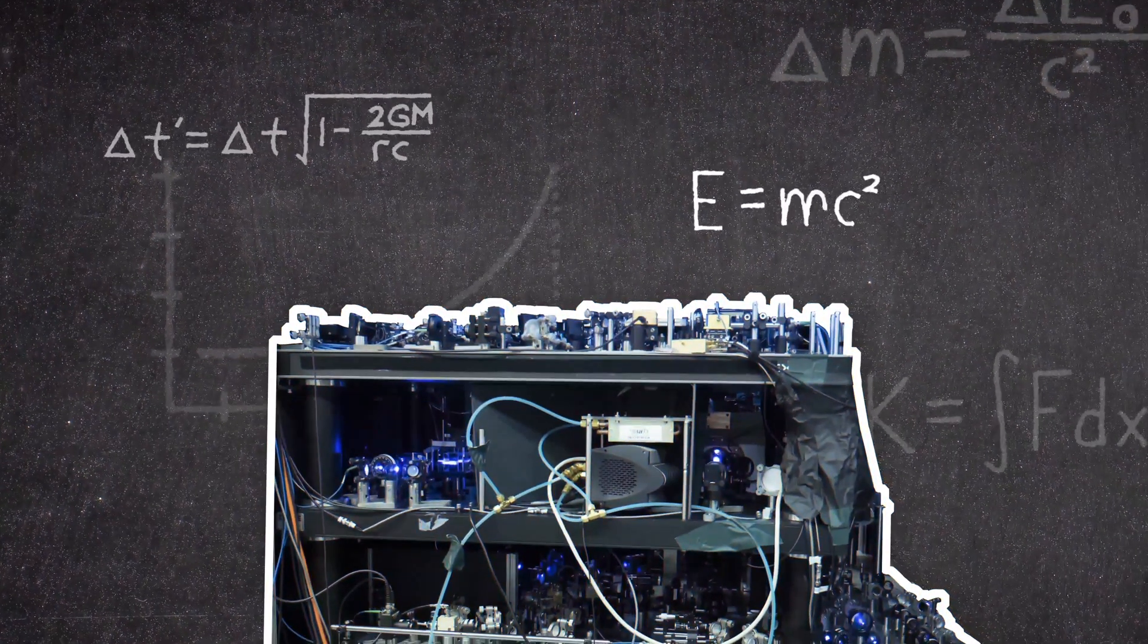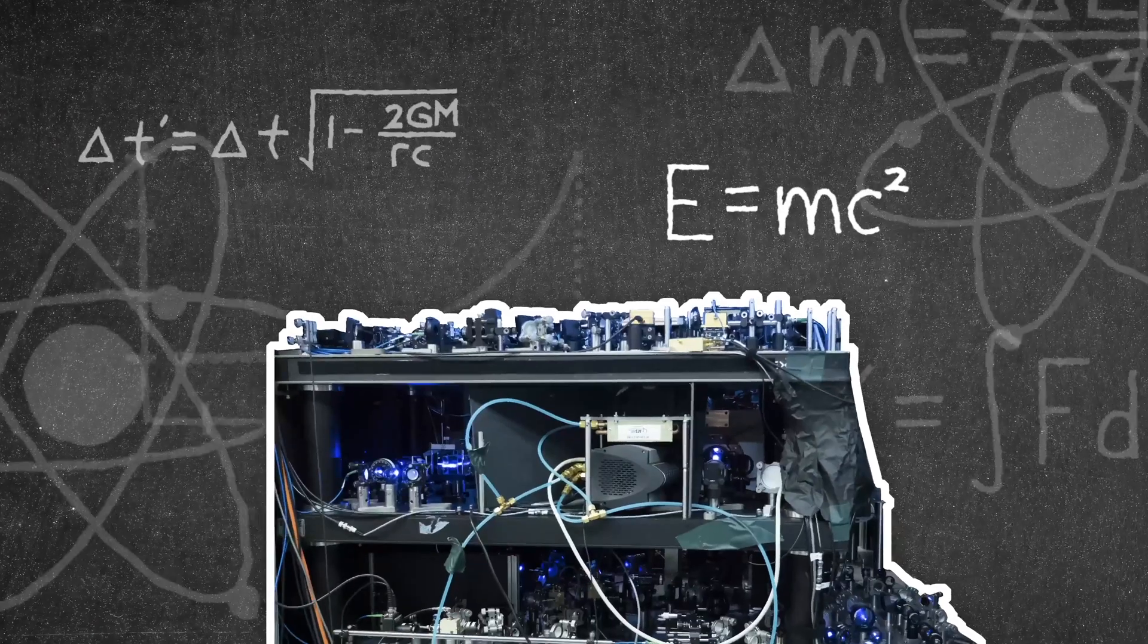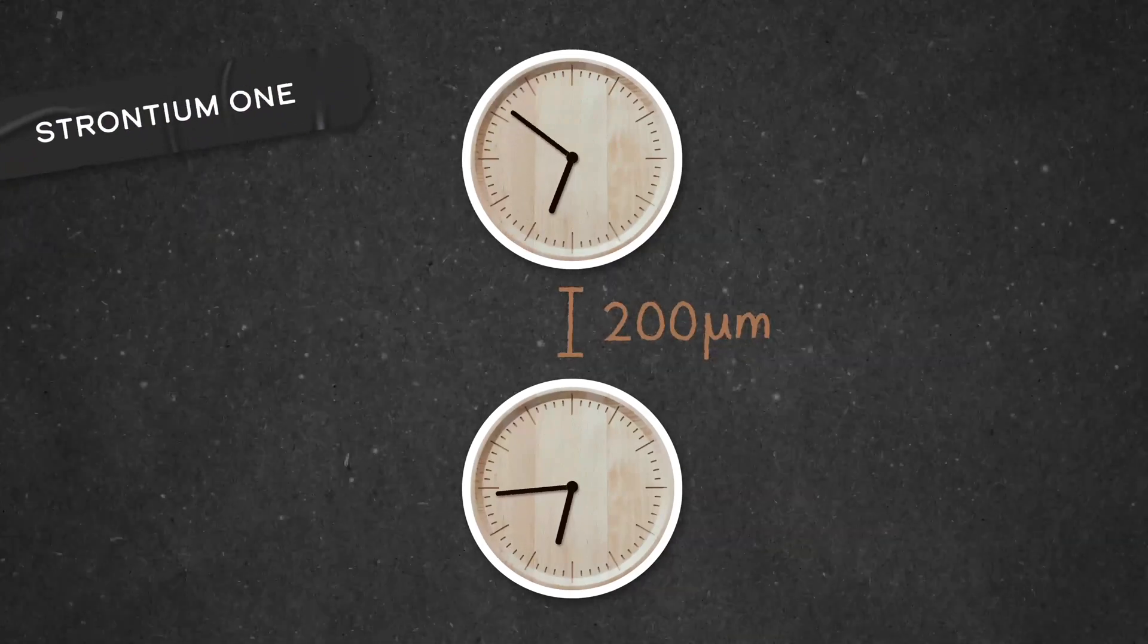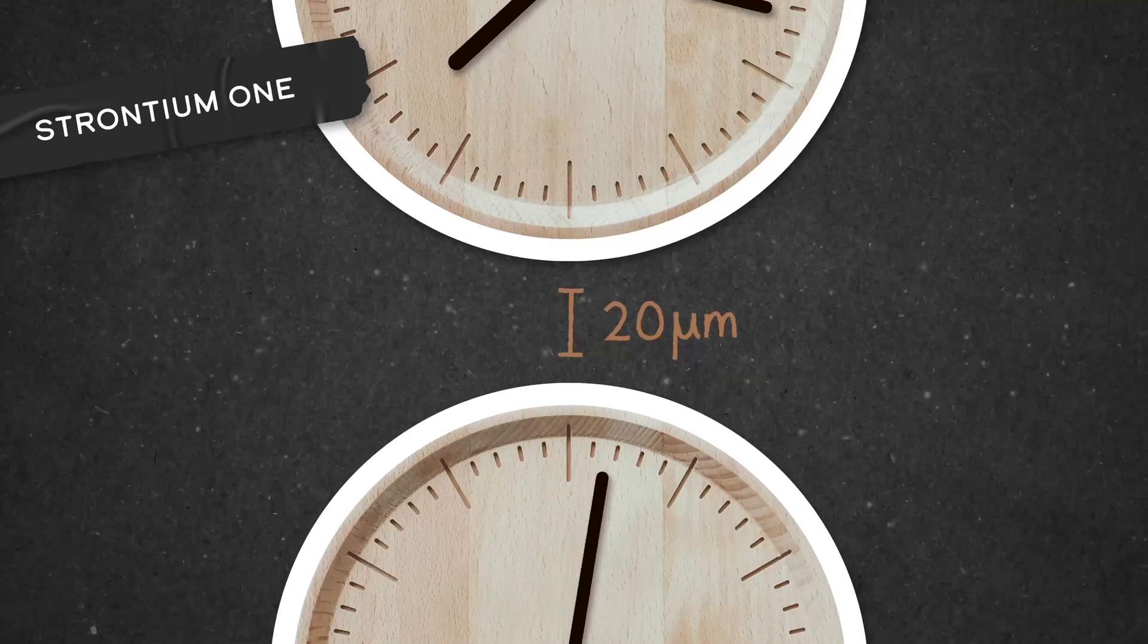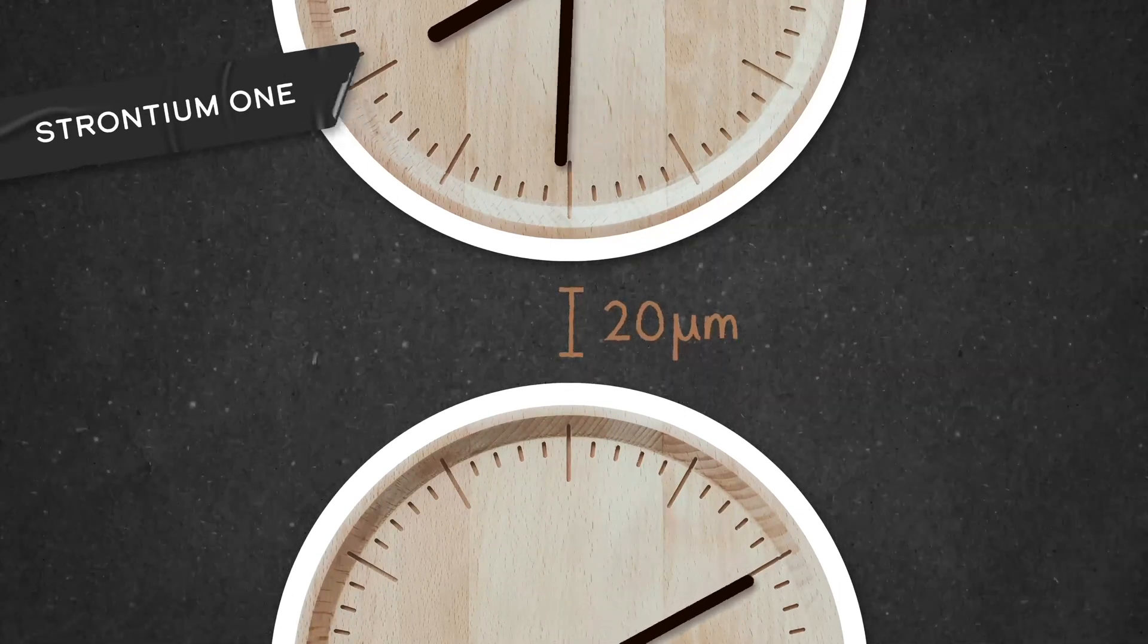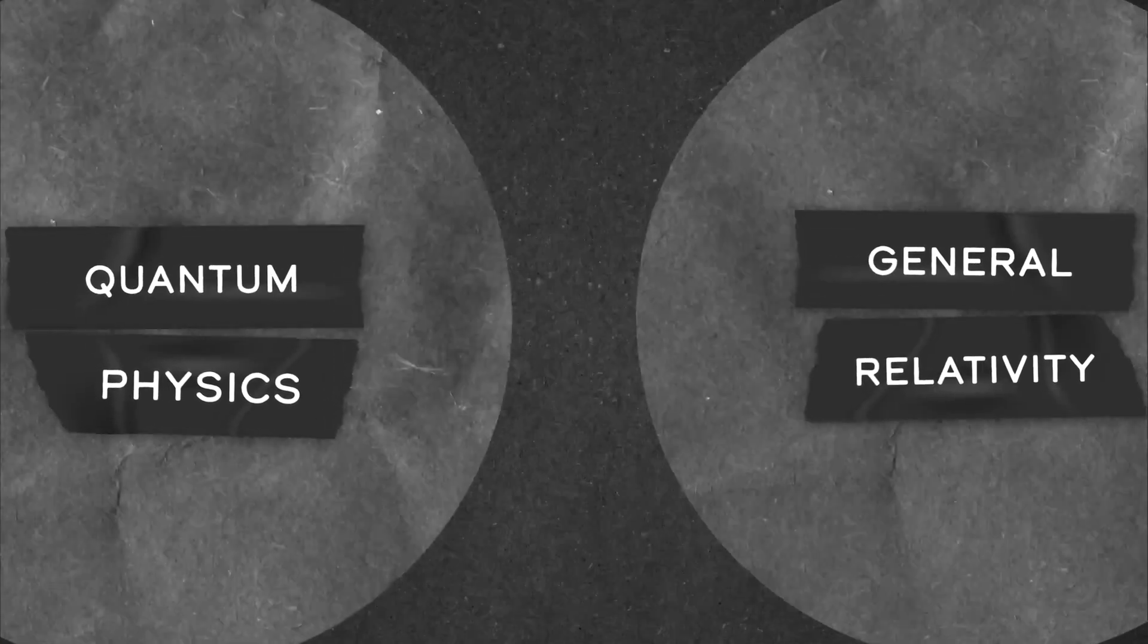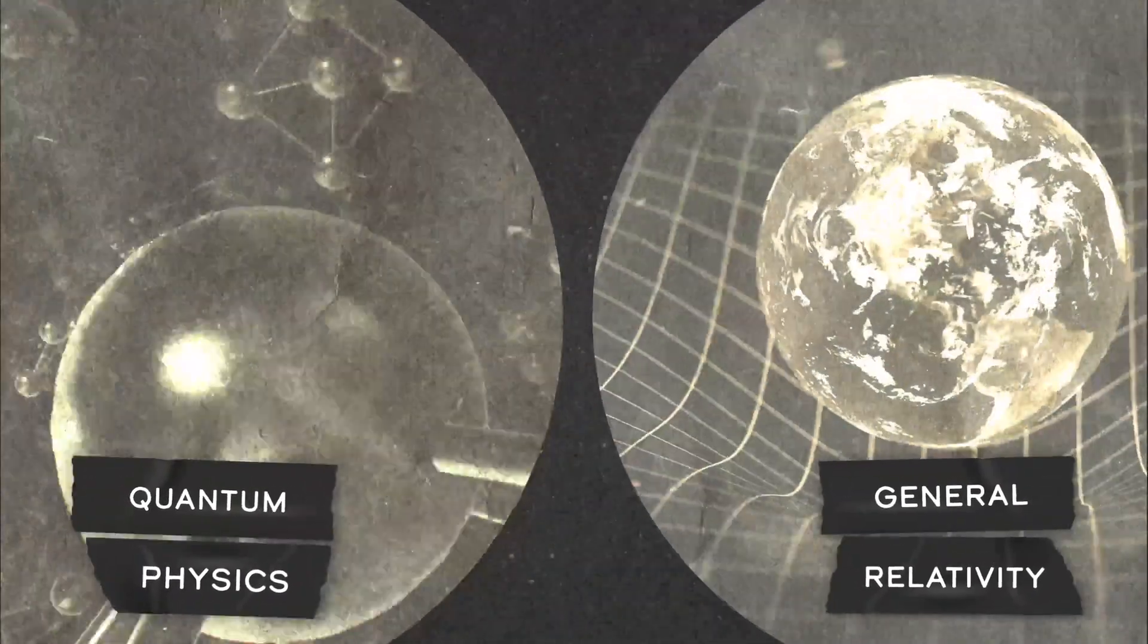And for physicists, these new clocks can bridge the gap between the quantum world and Einstein's theories. Strontium-1 can measure time dilation effect across a few hundred microns. But if we push another factor of 10, when we start to measure time difference across a few microns, now we start to probe the connection between quantum physics and general relativity. A very microscopic view of the world and a very macroscopic view of the world.